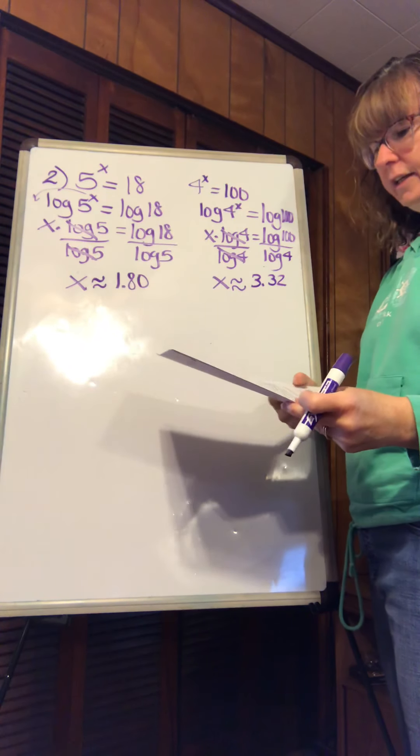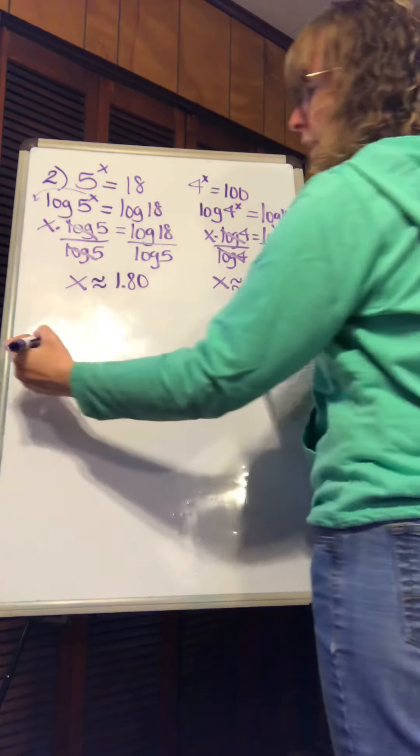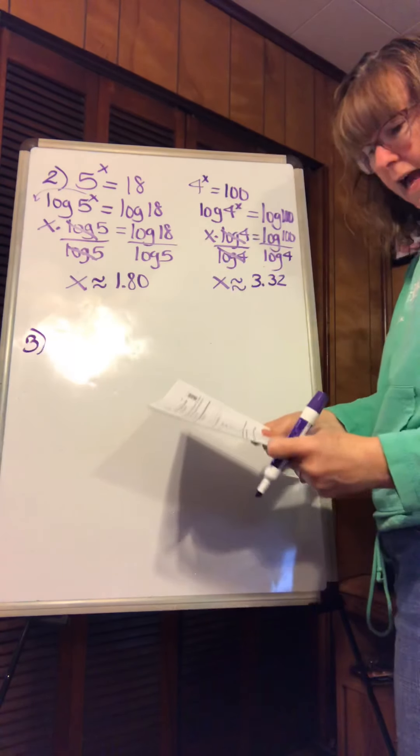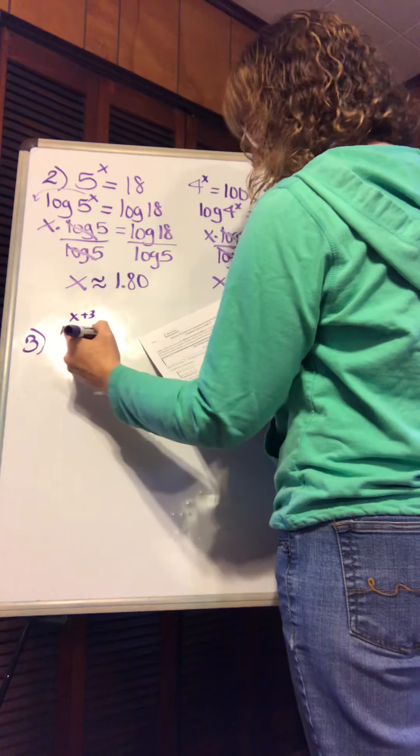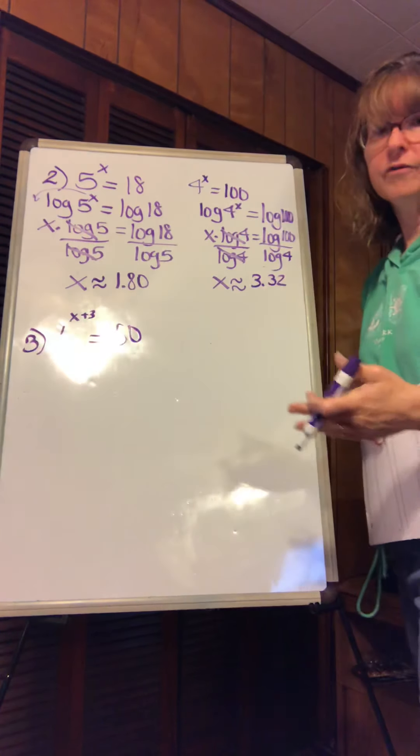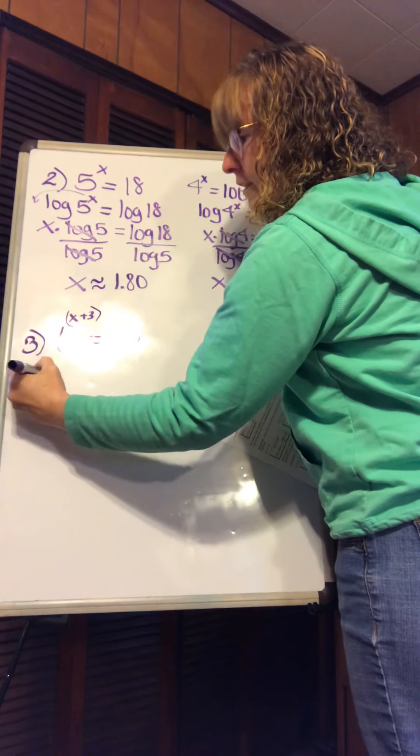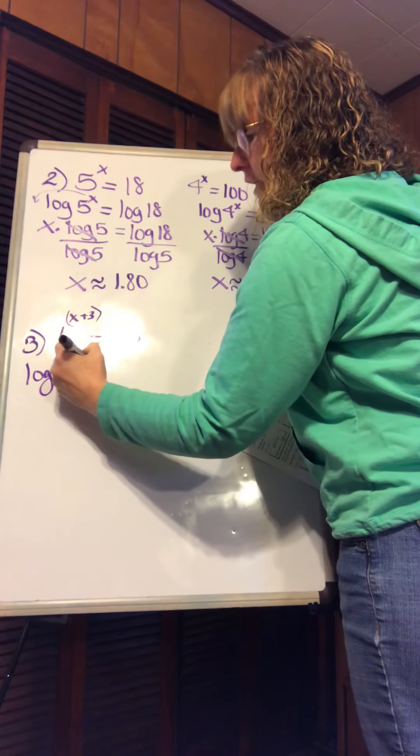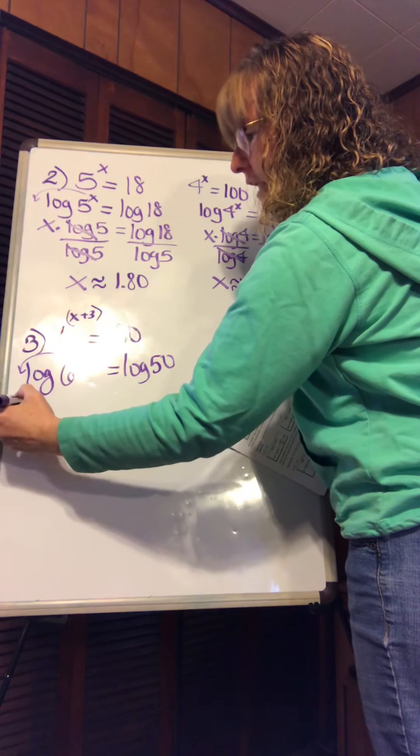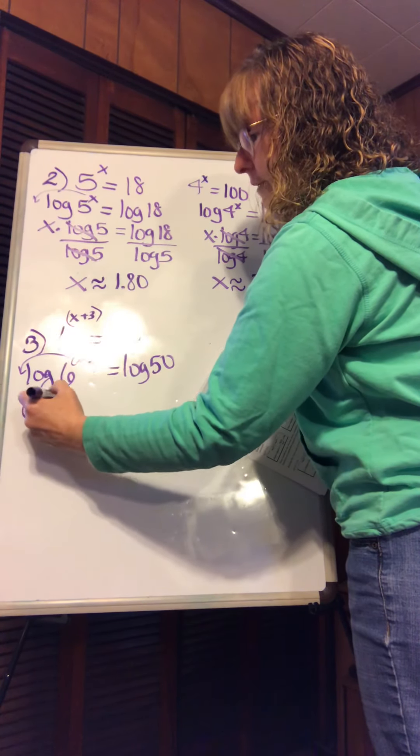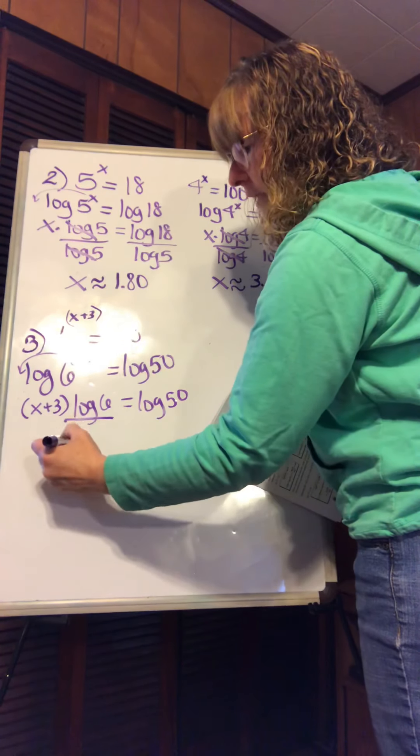Letter C is the same process, so I'm going to let you try letter C yourself. When you get to a problem like number 3, it gets a little bit more involved to look at. You have 6 raised up to the x plus 3 is equal to 50. It looks more involved but it's really not. This guy is the entire exponent. When you say the log of 6 to the x plus 3 is equal to the log of 50, what happens is this comes down in front. Now you have x plus 3 log of 6 is equal to the log of 50. We're going to divide by the log of 6.